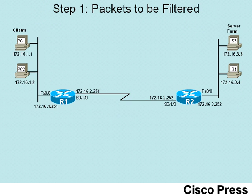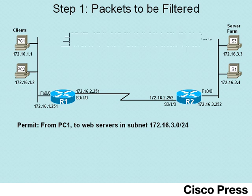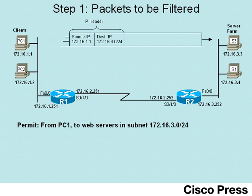Next let's take a look at the criteria we'll use to build this particular access list. First, we're going to want to permit traffic that comes specifically from client PC1 toward the web servers in subnet 172.16.3.0. The source IP address will be 172.16.1.1, which is specifically PC1, and the destination can be anybody in subnet 3, listed as 172.16.3.0 with the /24 mask.